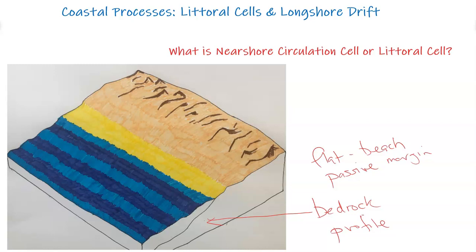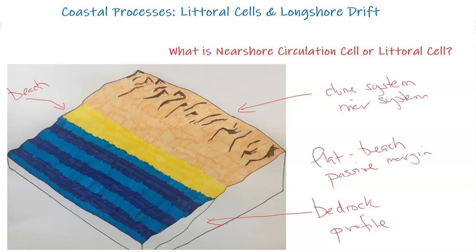We have the backshore and the foreshore, the beach area, and the berm — an area of sand built up. We have a classic flat, very gently sloping coastal zone with a dune system. It could also have a river system characterized by a drowned river system, delta, or estuary that flows into the ocean.